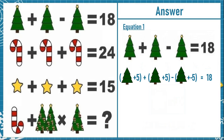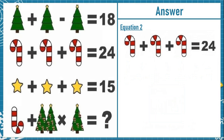Putting all these values into equation 1, we have tree plus 5, plus tree plus 5, minus tree plus minus 5, is equal to 18. Solving this, we get a tree is equal to 3.